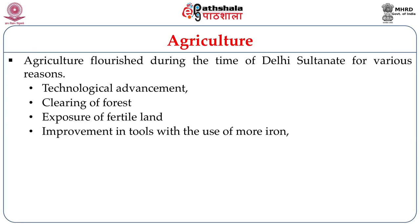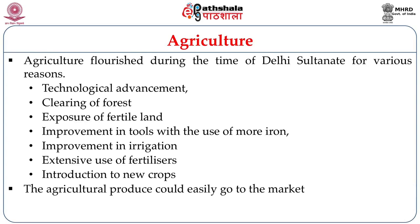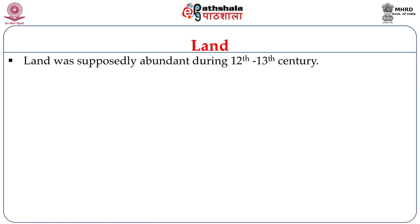Improvement in tools with the use of more iron, improvement in irrigation, extensive use of fertilizers, and introduction of new crops paved the way for agricultural improvement. Agricultural produce could now easily go to the market, and this surplus production enhanced the non-agrarian production of the time.